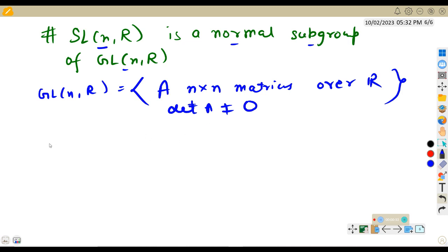In simple words, invertible matrices. And what is SL(n,R)? SL(n,R) consists of those A belonging to GL(n,R), those invertible matrices whose determinant of A is 1.